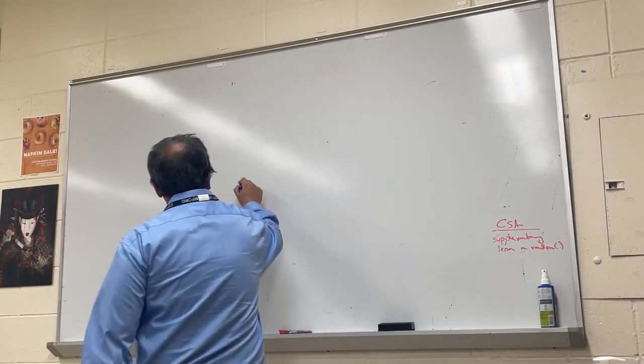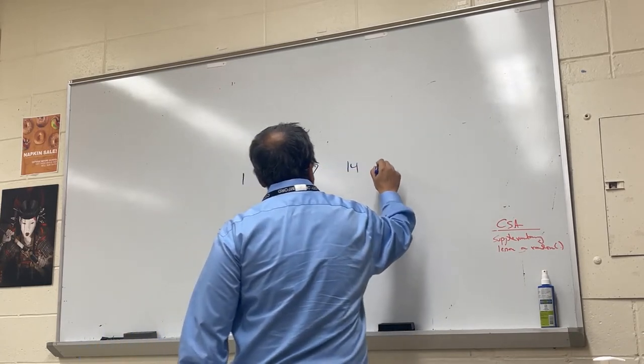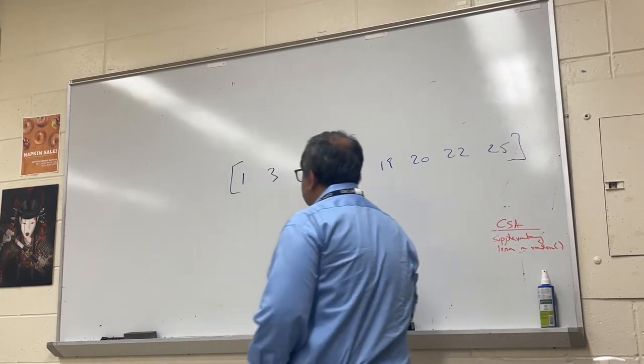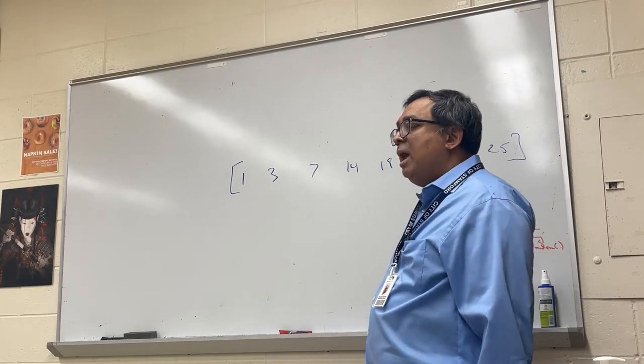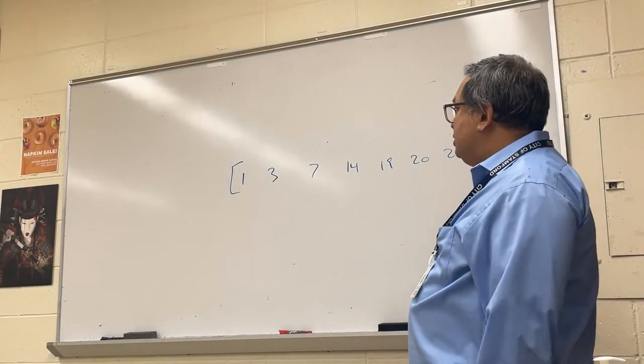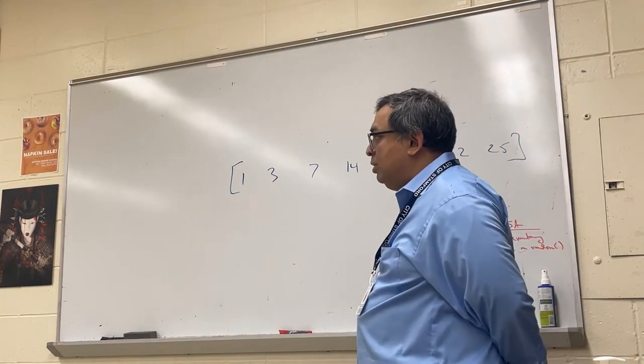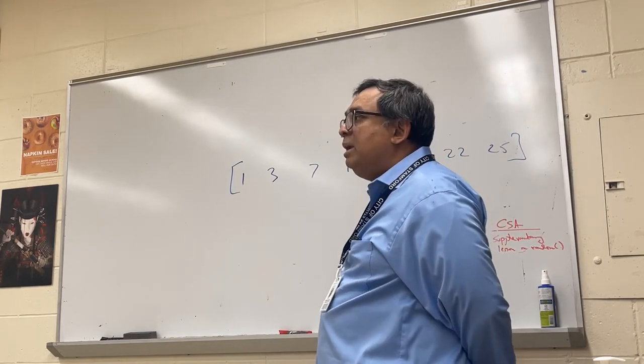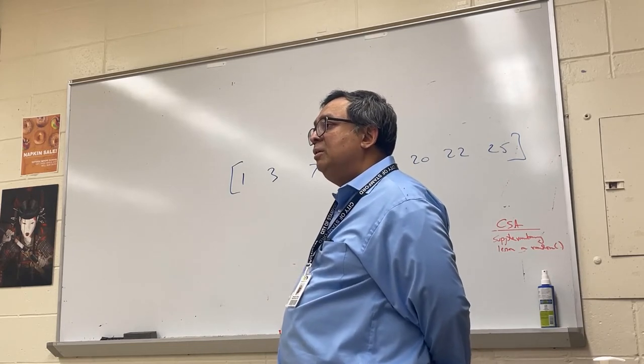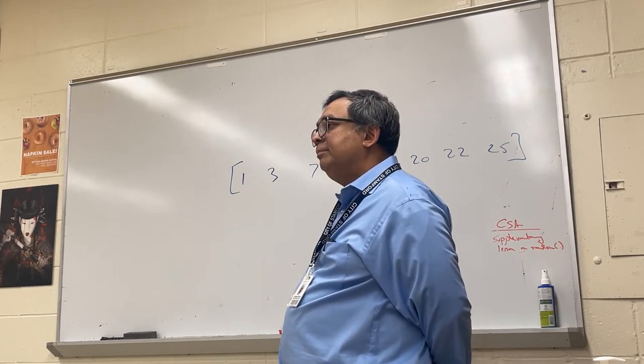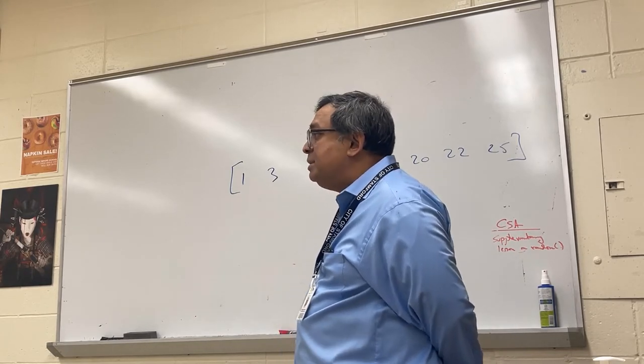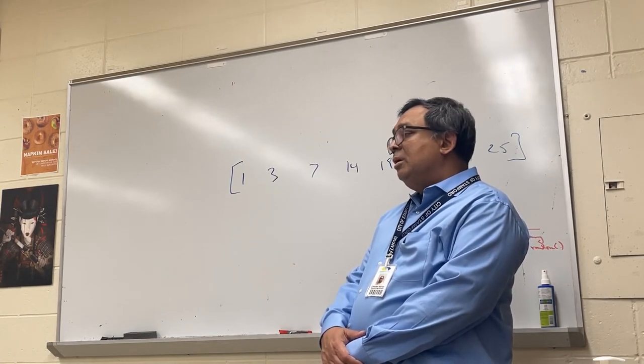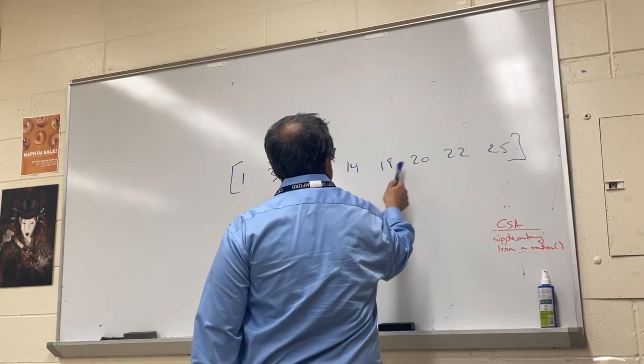Now, some of you have remembered this from CSA or maybe even computer science principles, and some of you won't remember it. So I'll just go over with you again. Let's say I have a sorted list like this: 1, 3, 7, 14, 19, 20, 22, and 25 like this. And let's say I tell you I'm thinking of a number on this list. You could start the guessing like this. You could say, is your number 1? Is your number 3? Is your number 7? Is your number 14? Is it 19? What kind of search am I doing here, Mr. Shulson? Linear search. See that? Linear search. Is there a faster way?